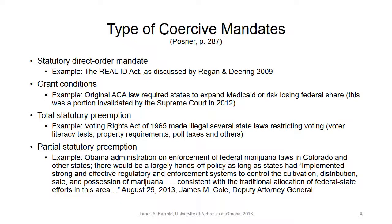That doesn't mean states don't fight this. An example of total statutory preemption was the Voting Rights Act of 1965, which made illegal several state laws restricting voting. Many southern states, in a fairly transparent effort to keep African Americans from voting, applied measures like literacy tests, property requirements, poll taxes, and other requirements. The Voting Rights Act said those kinds of things are illegal, which basically preempted all those laws in those states.